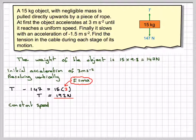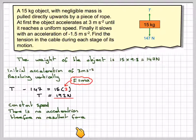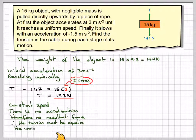At constant speed, when it travels at constant speed there is no acceleration, and therefore there's no resultant force. Therefore, these two must balance each other out. The tension must be equal to the weight. Therefore, the tension will be equal to 147 newtons.